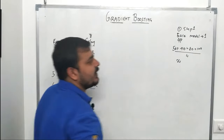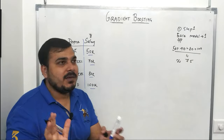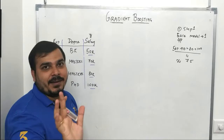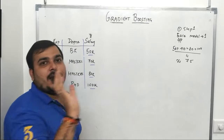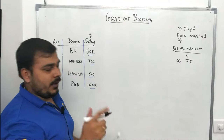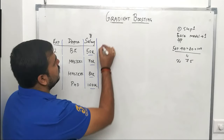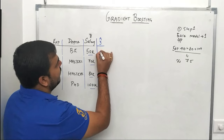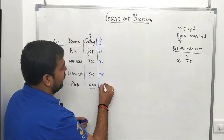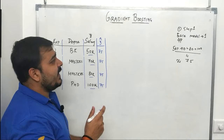The approximate average value I'll use is 75k. This is my first base model. Remember, whenever I pass any training data to this base model the output will always be 75. So my predicted value y-hat will be 75, 75, 75, 75 for all records.